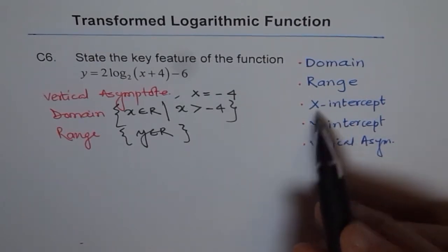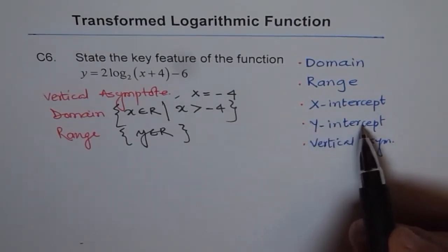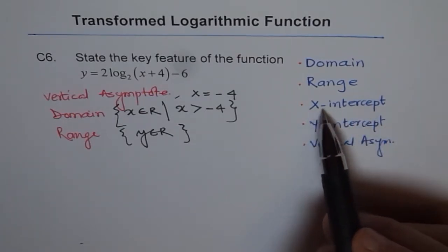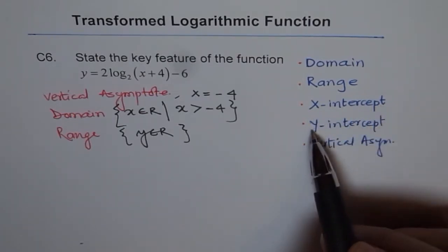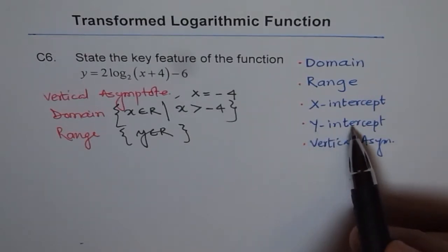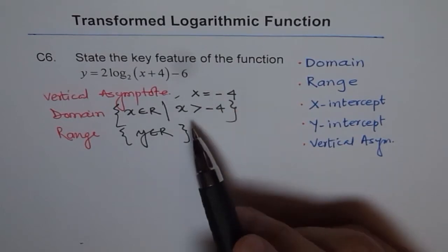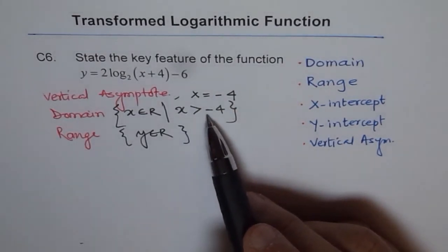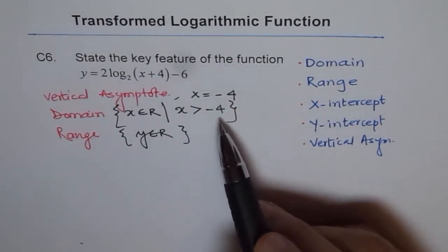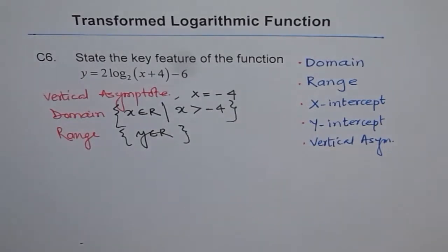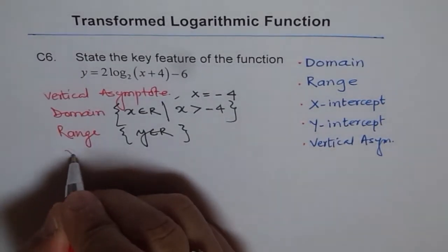And let's try to find out what is x-intercept and what is y-intercept. A logarithmic graph will always have an x-intercept, but may not have y-intercept, depending on its domain. Now here, the domain is x is greater than minus 4, so this means it will have a y-intercept. So in this particular case, we will find both x-intercept and y-intercept.